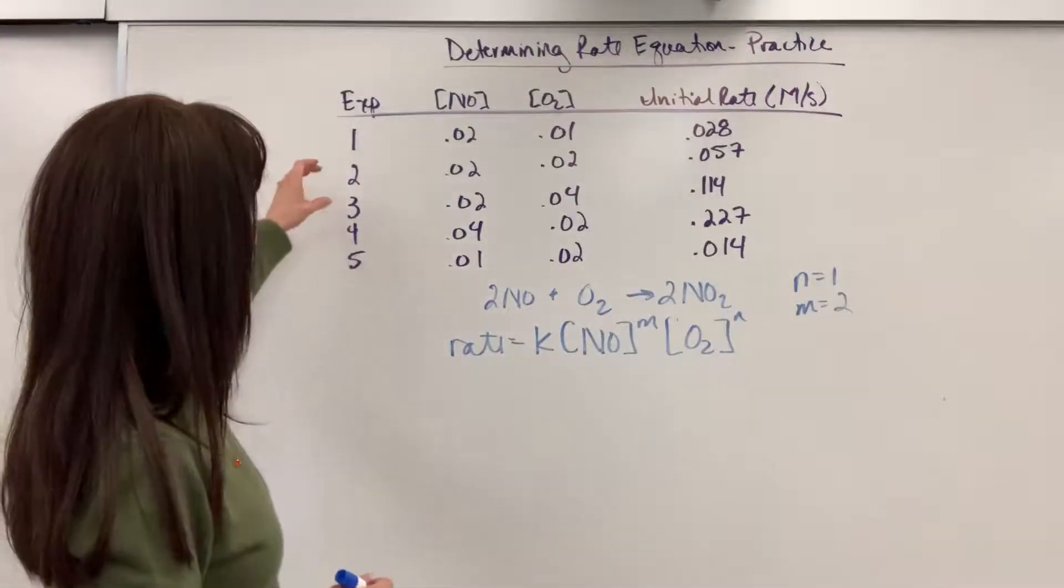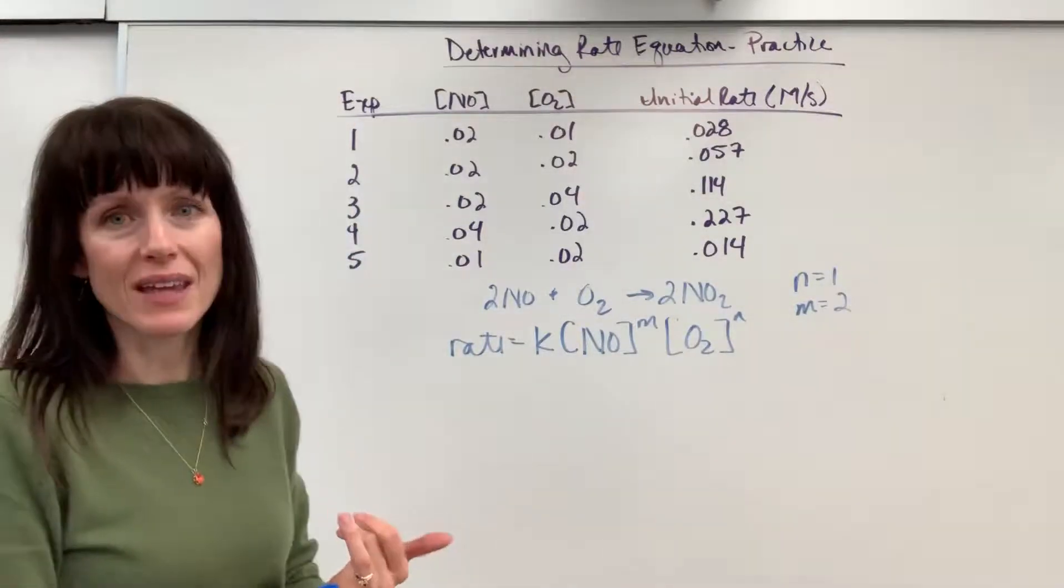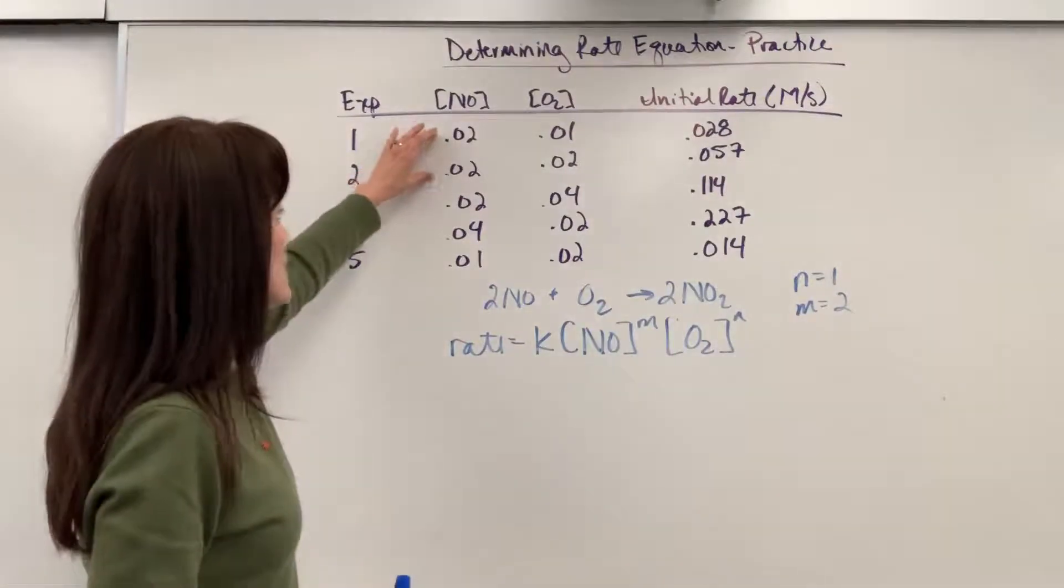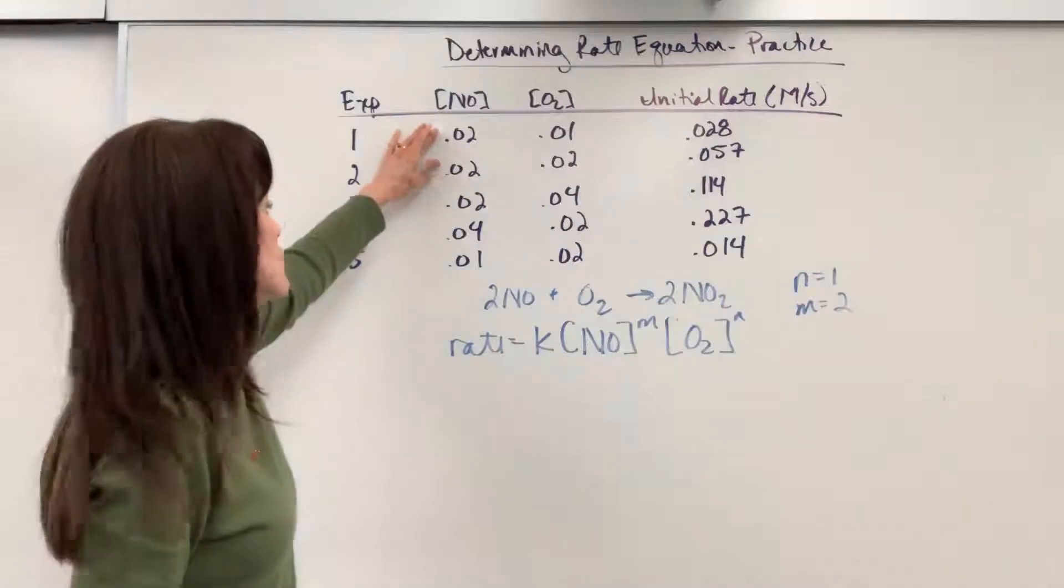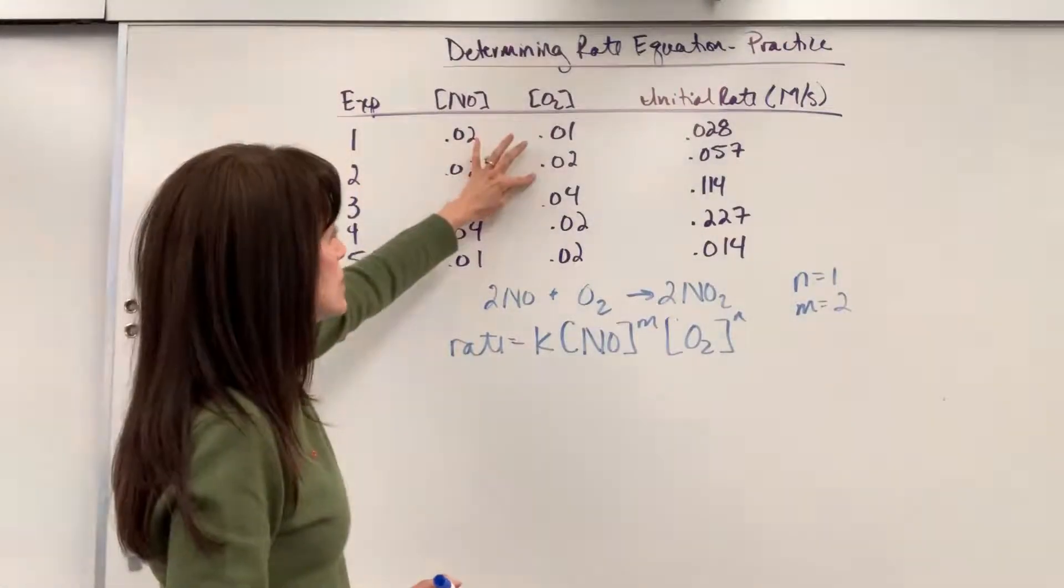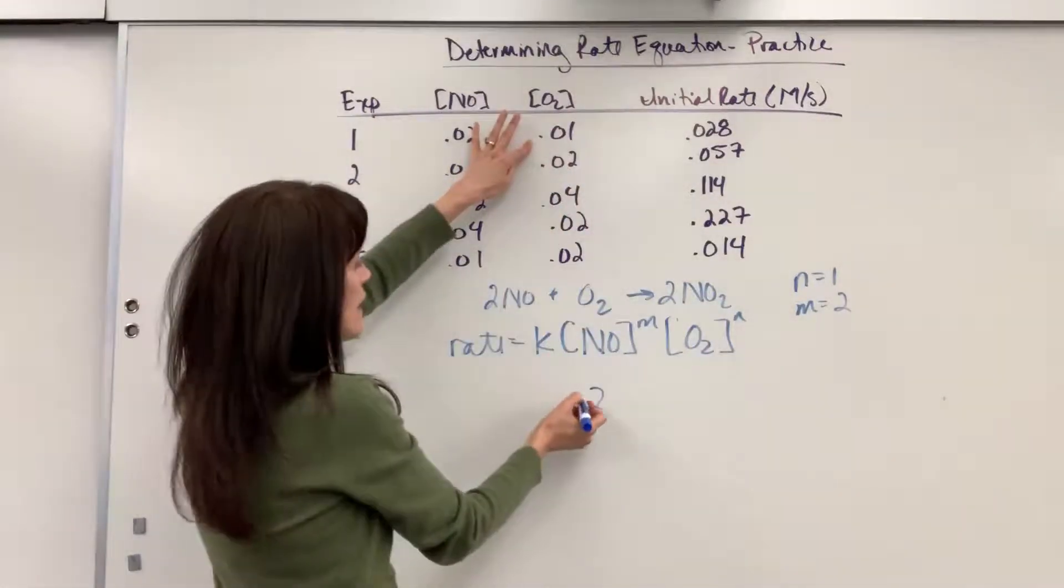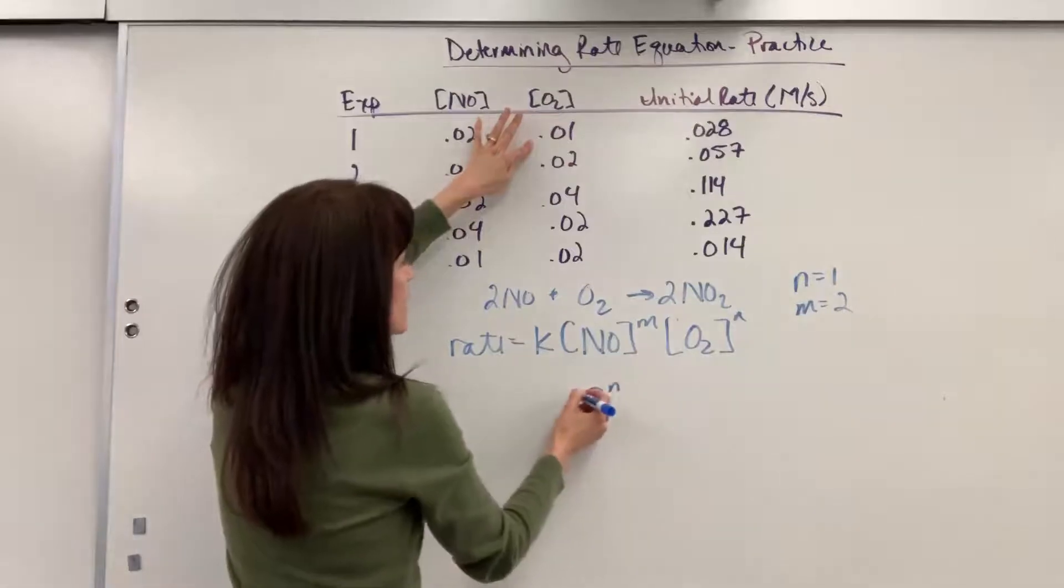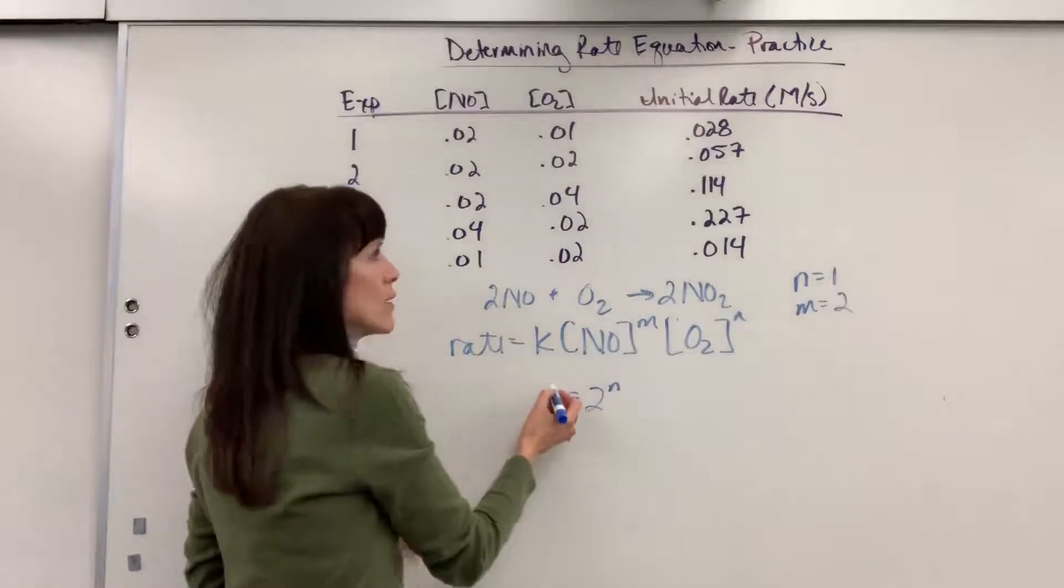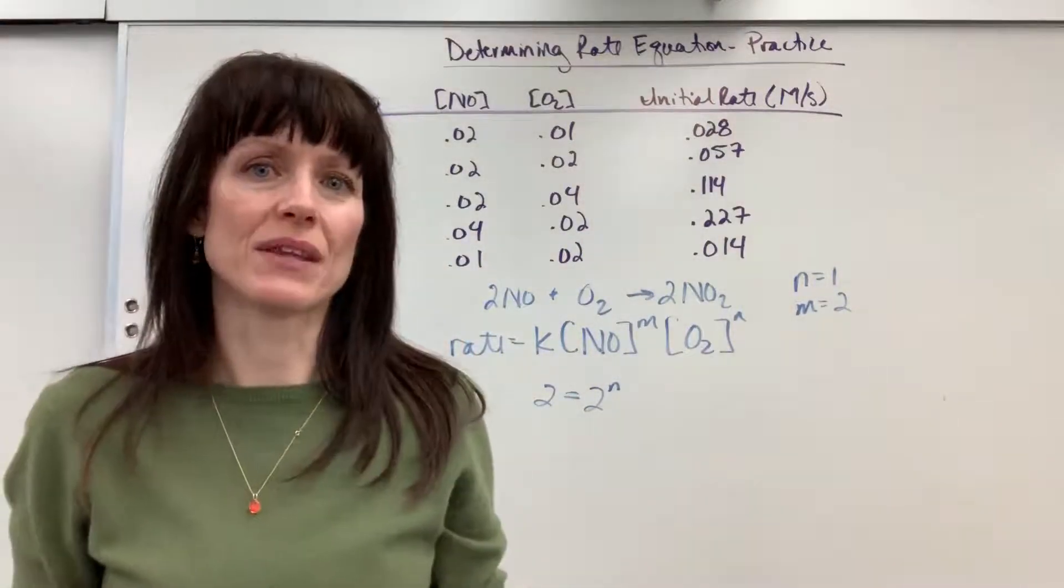So if I take these two trials, you can do this math in your head, you know that K is going to cancel. So you find the two trials where something cancels out. So NO is 0.02. Then in my head, I go, okay, two over one gives me two. That's going to be the concentration raised to the N. And that has to equal 0.057 divided by 0.028. And I go, oh, that's just two. You can do all of that in your head without writing it all out.